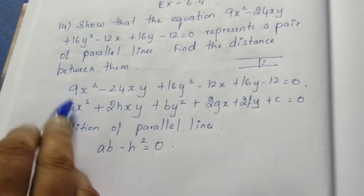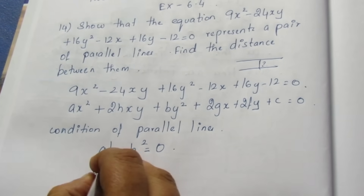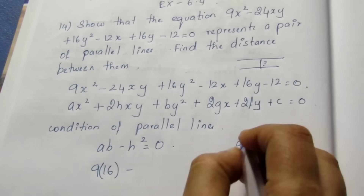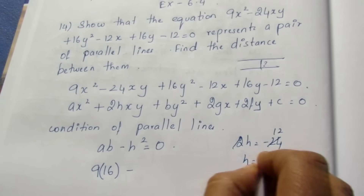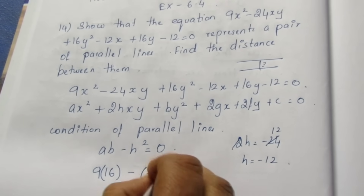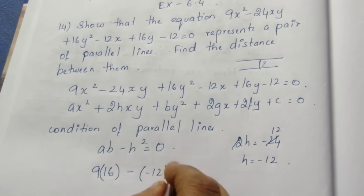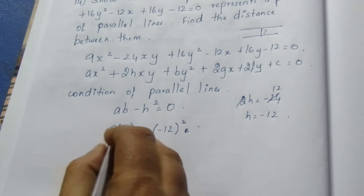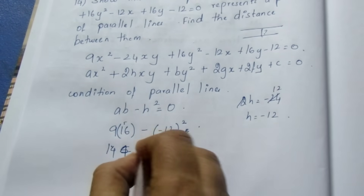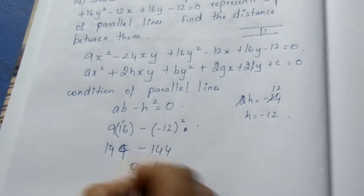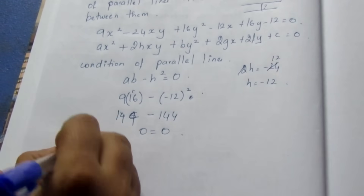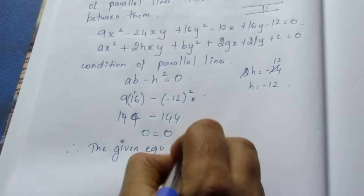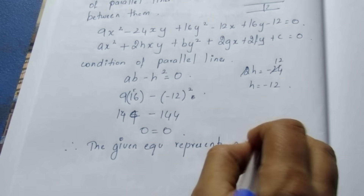The coefficient a = 9, b = 16. Since -2h = -24, h = -12. So ab - h² = 9 × 16 - (-12)² = 144 - 144 = 0. Therefore, the given equation represents a pair of parallel lines.